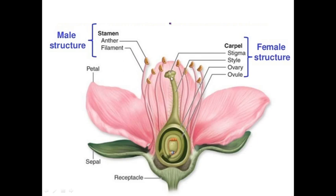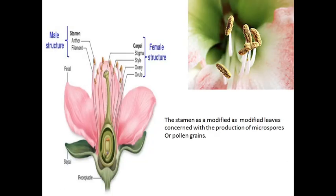The female part is a flask-like structure also known as gynoecium or carpel. It has a stigma which catches the pollen grains, then a long neck-like structure called the style, and a swollen base called the ovary. Inside the ovary we have ovules.